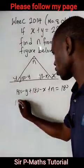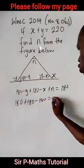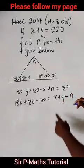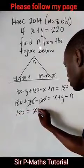Now collect like terms. All the numbers will come one side. This one will come over. Then 180 minus 180, I have 180 equal to x plus y minus n.